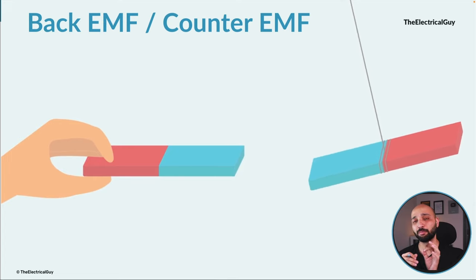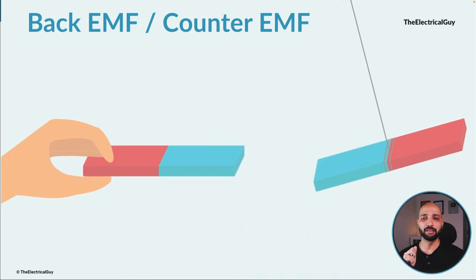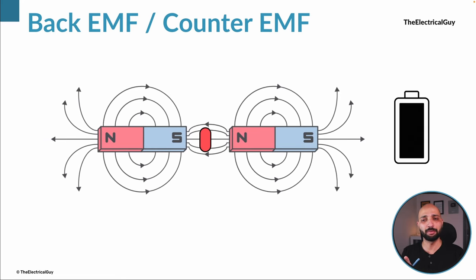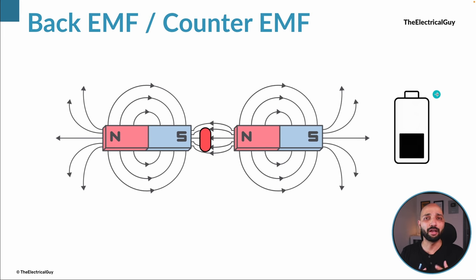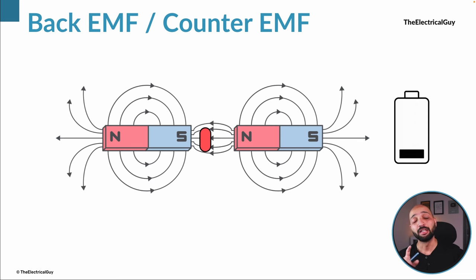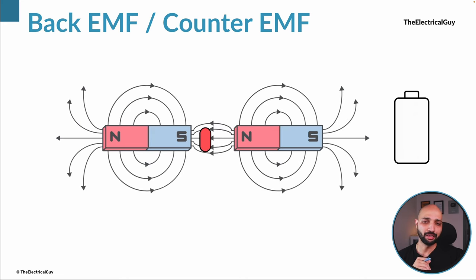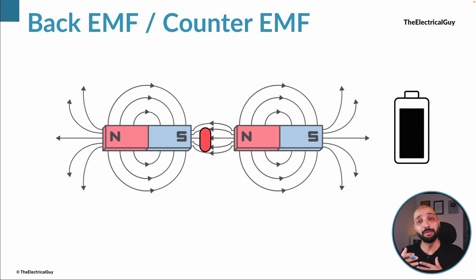That is the first basic principle. The second basic thing is: let's say we have a magnetic field generated by a permanent magnet or electromagnet, and we have placed a conductor inside it. If we move the magnet, the flux interacting with the conductor varies, and as a result a voltage is generated across the terminals of the conductor. This is nothing but Faraday's law of electromagnetic induction — if flux is being cut, an EMF will be induced across the terminal of the conductor.